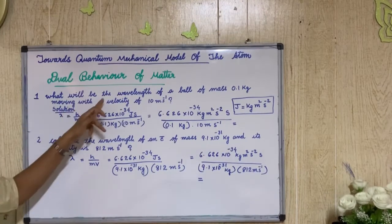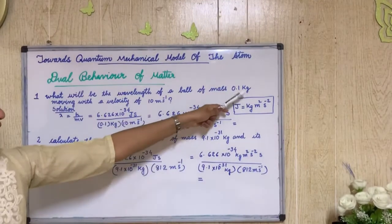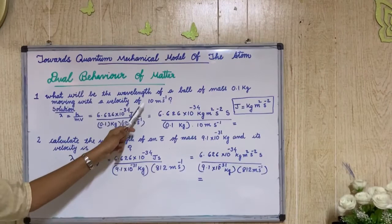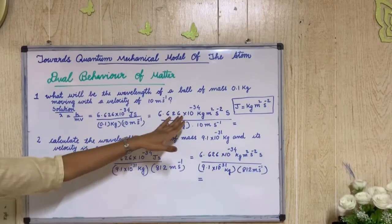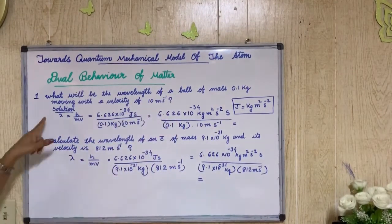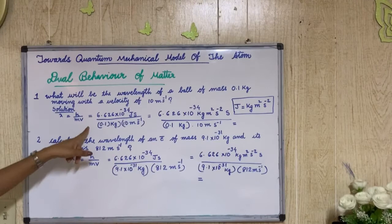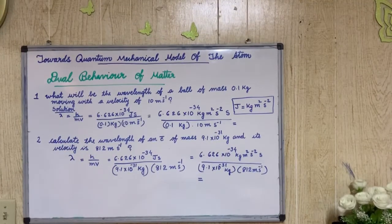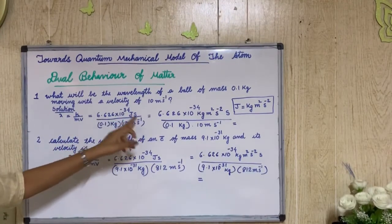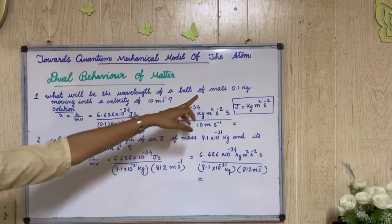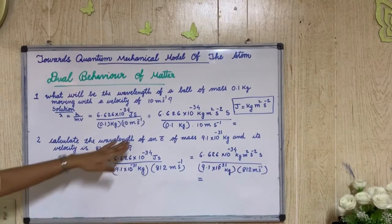Problem 1: What will be the wavelength of a ball of mass 0.1 kg moving with a velocity of 10 meter per second? We apply the de Broglie equation: lambda equals h divided by mv. Substituting: the Planck constant is 6.626 × 10⁻³⁴ joule-second, divided by mass 0.1 kg and velocity 10 meter per second.